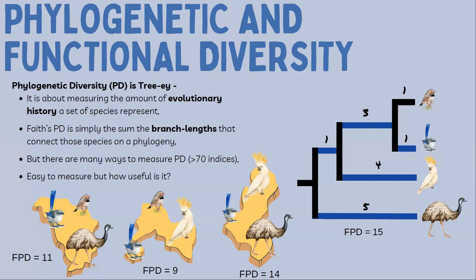Broadly, they're both measures of biodiversity — they measure particular facets of biodiversity. Phylogenetic diversity is a tree measure of biodiversity. It measures the amount of evolutionary history a group of taxa represent. It was originally proposed by Dan Faith in 1992 with a simple index we now call Faith's PD. You take a set of taxa — like an emu, a zebra finch, and a superb fairy wren — take their phylogeny, and sum the minimum number of branches connecting them. For this assemblage, that gives a phylogenetic diversity of 11.